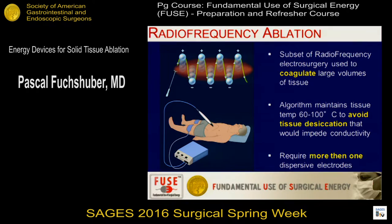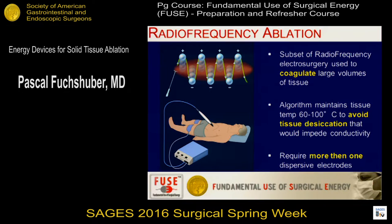We are using alternating current just like we do with most electrosurgical energy systems in the operating room, but we use much higher wattage — up to 250 watts. So we require larger return surfaces in order to prevent burns or heating at the dispersive electrodes. Many systems have either very large or two return electrodes. The algorithms in the ESU for radiofrequency ablation are designed to maintain low tissue temperature throughout the entire tissue effect.